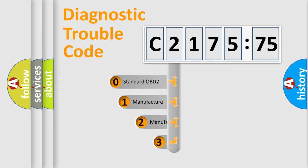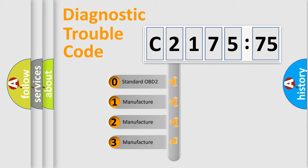Powertrain, Body, Chassis, Network. This distribution is defined in the first character code.